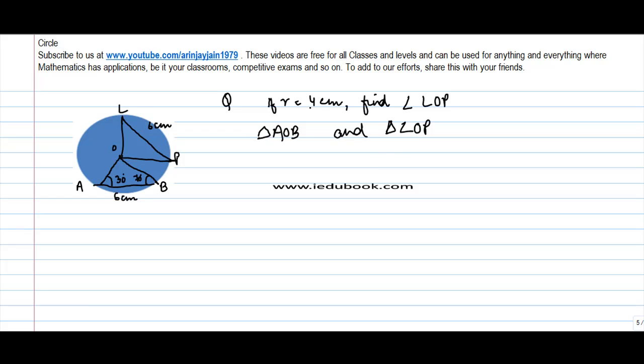We are told that the radius of the circle is 4 centimeters. OP is also a radius, OL is the radius, OA is the radius and OB is the radius.